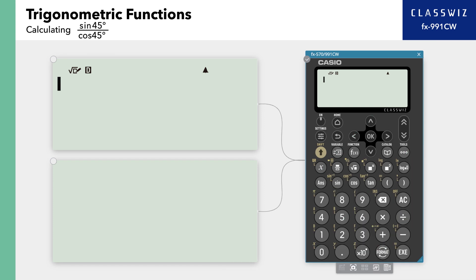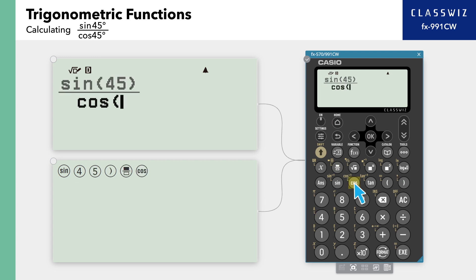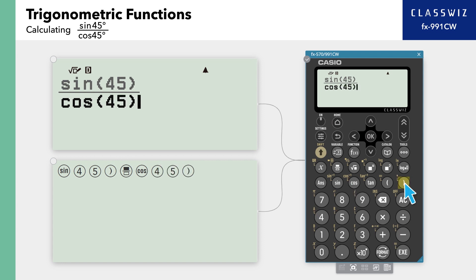Let's see more examples of calculations using trigonometric functions. First, let's find the result of sine 45 degrees over cosine 45 degrees. Enter sine 45 degrees and press the fraction button, then enter cosine 45 degrees for the denominator. Press Execute to return 1 as the result.